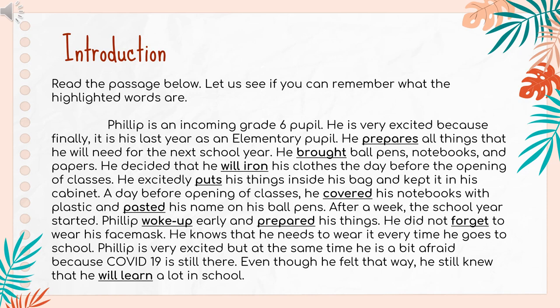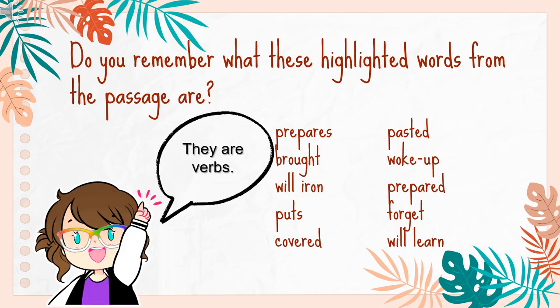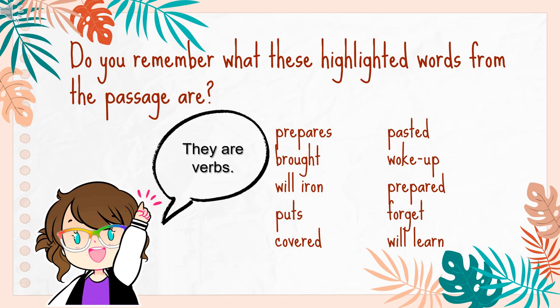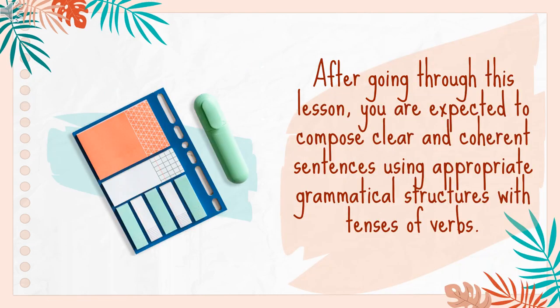Observe the highlighted words. Do you remember what these highlighted words from the passage are? You're right! They are called verbs. Did you notice that the highlighted verbs happen in different times? These differences in verb tenses will be the focus of our lesson today. After going through this lesson, you are expected to compose clear and coherent sentences using appropriate grammatical structures with tenses of verbs.